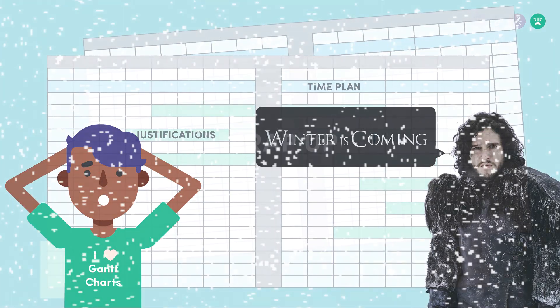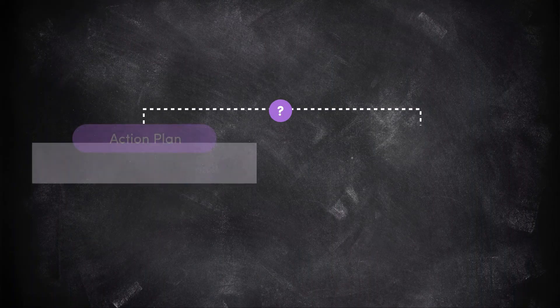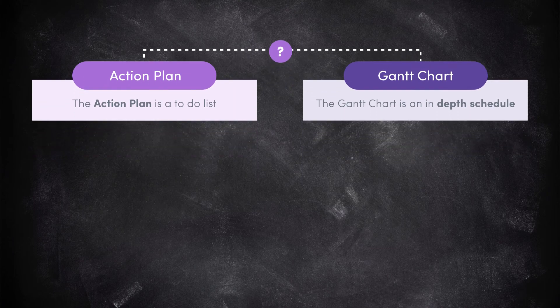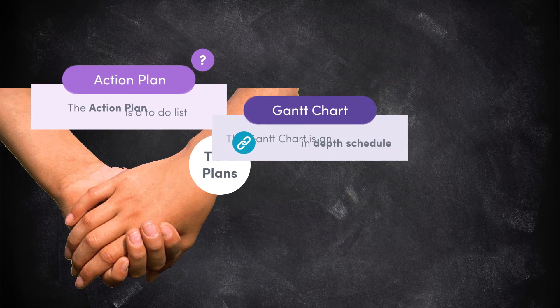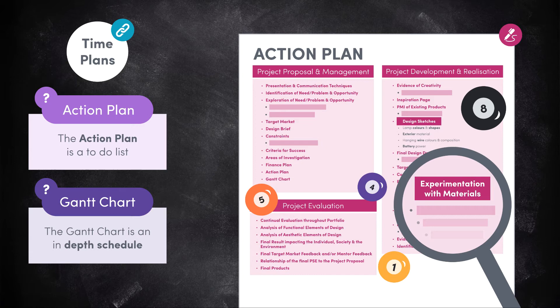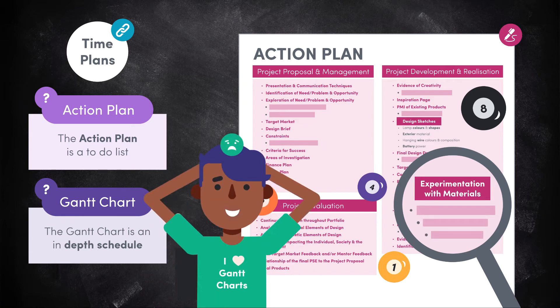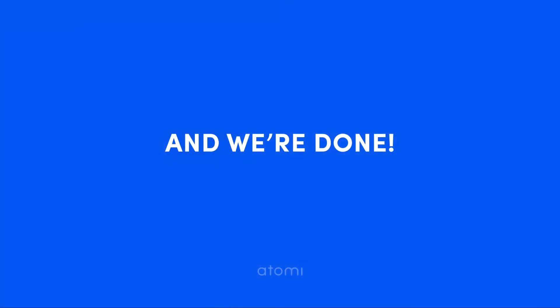Alright guys, so that's it for this video. Now that we understand what an action plan and Gantt chart are and how they are linked, we've written up our action plan with the little to-do list style details we need, and we are mentally ready to tackle the Gantt chart. I know this video was smooth sailing, but you do deserve a bit of a break — it's been pretty heavy work lately and it's just about to get a whole lot heavier. So catch me in the next video where we'll be finishing off the time plan syllabus dot point with the dreaded Gantt chart. See you soon!